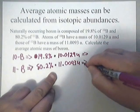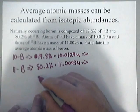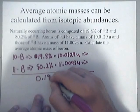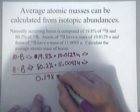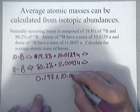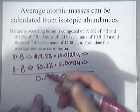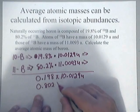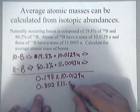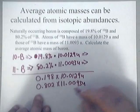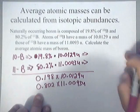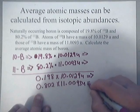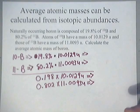We have, I'm going to convert this into a decimal. 0.198 times 10.0129U. And we have 0.802 times 11.0093U. As long as I didn't write it here, I was afraid I'd run out of room, and I am going to run out of room. But anyway, once I convert everything into decimals, I can now use a calculator.